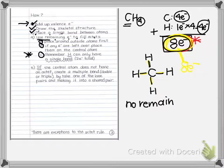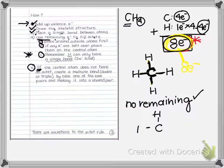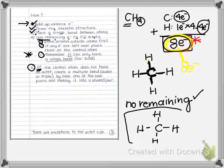After placing single bonds in CH4, I've already used all eight electrons, so there are no remaining electrons to add to outside atoms. Moving to step five: check whether the central atom has eight electrons. Counting around carbon, it has eight. So for CH4, the Lewis structure is complete — four single bonds around carbon.